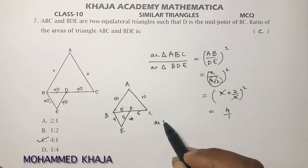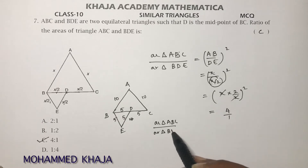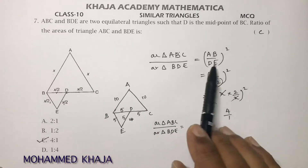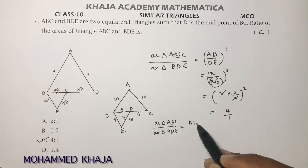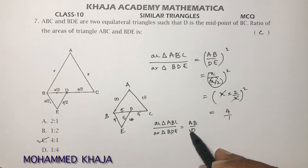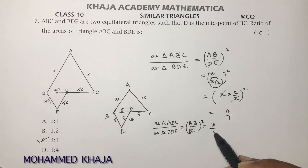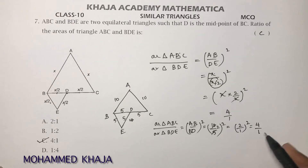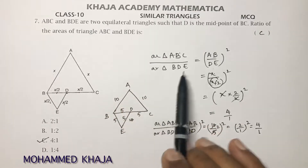Using numerical values: area of ABC corresponds to side 10, area of BDE corresponds to side 5. The ratio AB/BDE = 10/5, and squaring: (10/5)² = (2/1)² = 4, so the ratio is 4:1. This shortcut works well for MCQ-type questions.